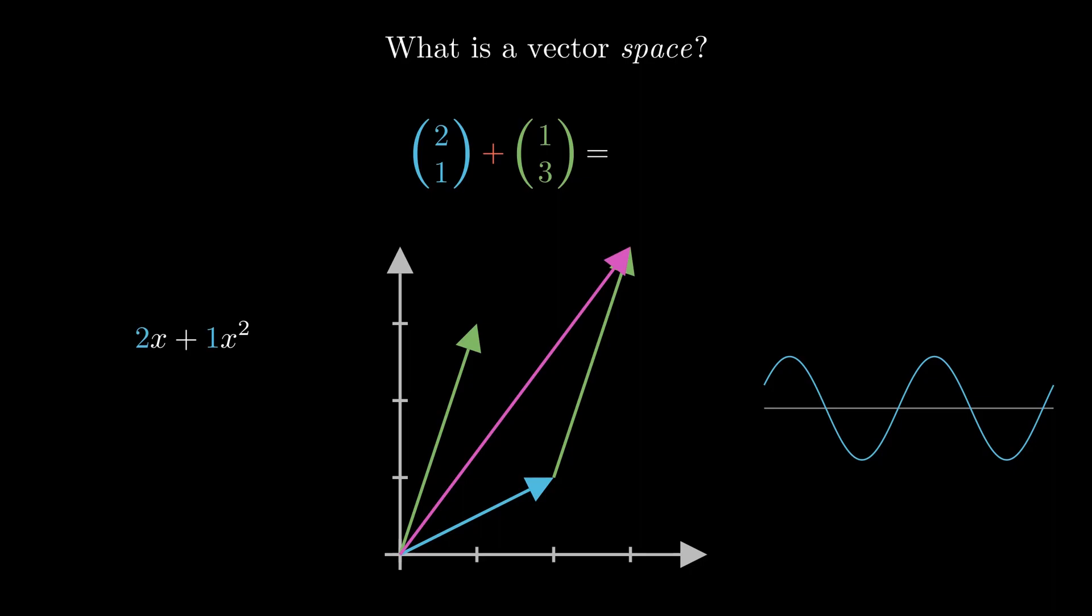Now, the blue vector takes you two steps to the right and one step up. The green vector takes you one step to the right and three steps up. So, when we've traveled both of them, we would have gone three steps across in total and four steps up in total. And so, the pink vector must be the vector 3, 4.